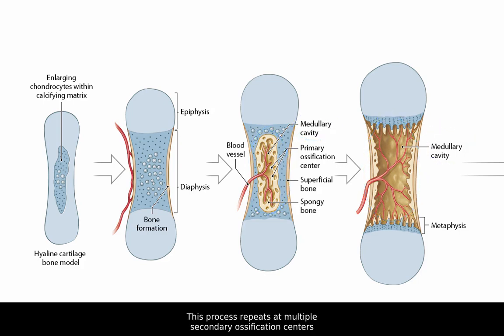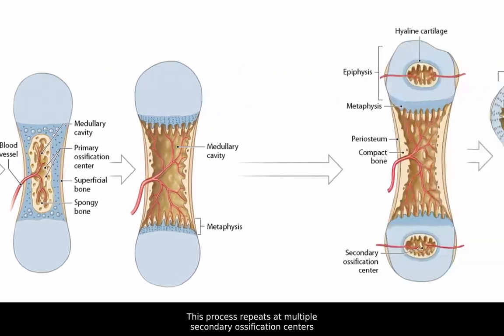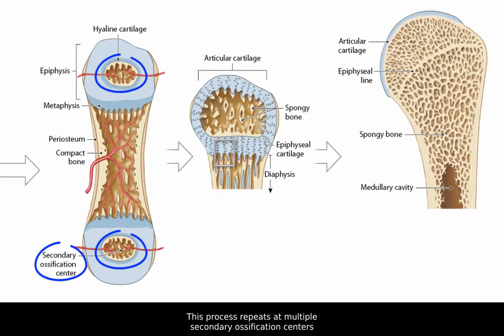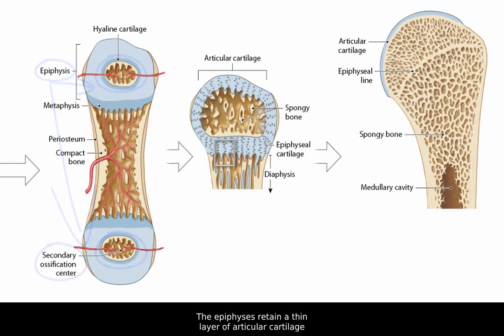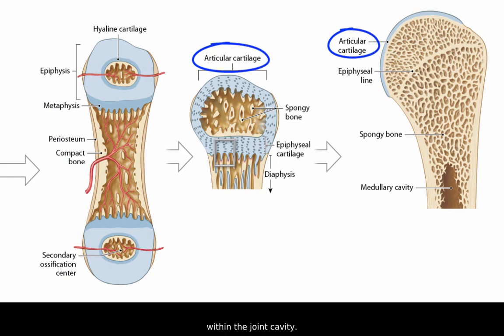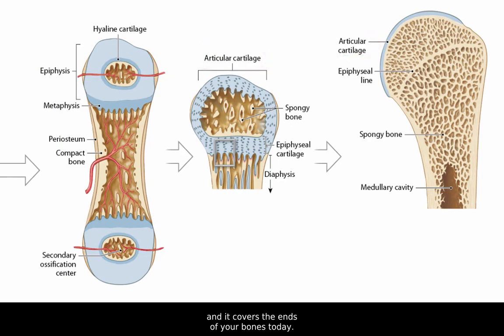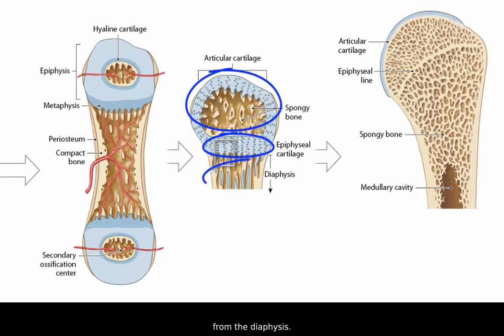This process repeats at multiple secondary ossification centers located at the epiphyses. The epiphyses retain a thin layer of articular cartilage within the joint cavity. This layer will remain in the adult and it covers the ends of your bones today. The epiphysial plate separates the epiphyses from the diaphysis.